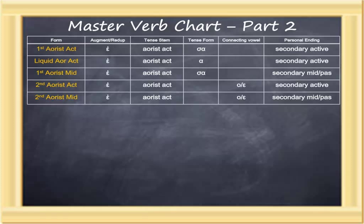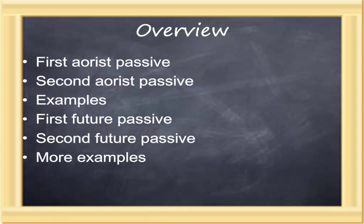The difference between first and second aorists is the presence of a tense formative in the first aorist. In the second aorists, the aorist stem varies from the present stem, and so a tense formative is unnecessary. In this lesson, we learn the aorist passives and the future passives, which are derived from the aorist passive stem. There are both second and first of both types.